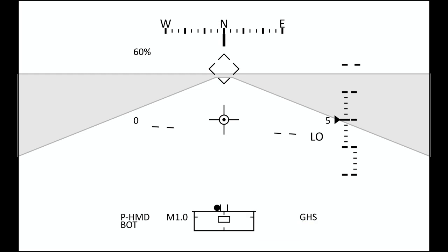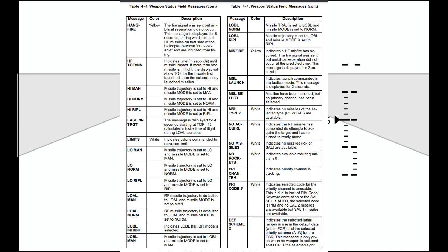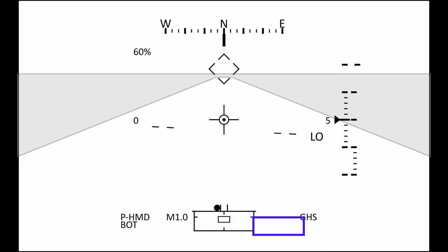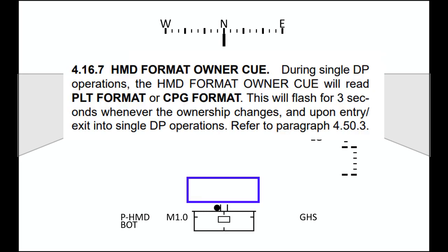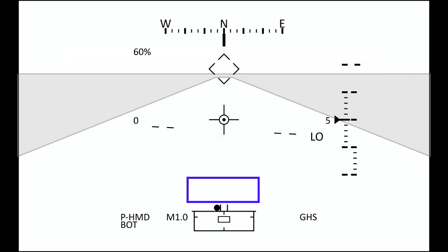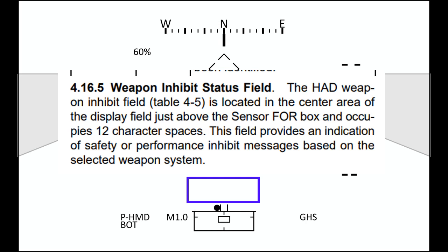Below that is some weapon select data, which confirms the weapon you have actioned, as well as any information regarding that weapon such as boresight requirements, laser tracking, and some other failures. We'll touch more on acquisition sources in a later video. Two items can appear above the field of regard in the case of a failure or limitation: the HMD owner cue, which informs you of which view you're actually seeing during a processor failure — which may display the other crew member's view in your own eye, obviously very disruptive to safety of flight. Below that, you can have a weapons inhibit message, which tells you something is prohibiting the selected weapon from firing.